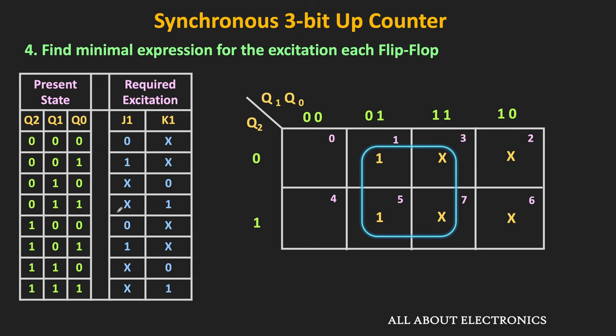In this 4-bit up counter, using the first AND gate, Q0·Q1 is generated. Using the second AND gate, we get Q0·Q1·Q2. The output of the first AND gate is one of the inputs to the second AND gate. By following the same procedure, we can build an N-bit synchronous up counter.